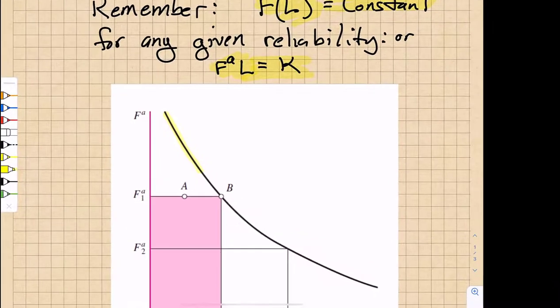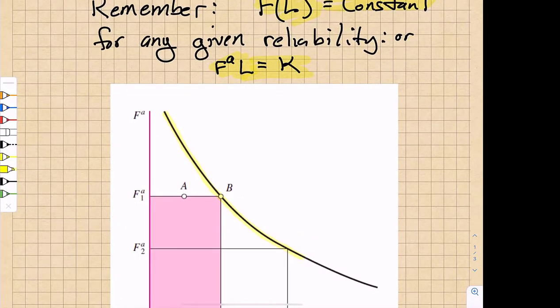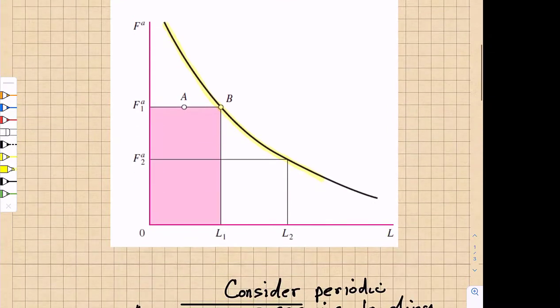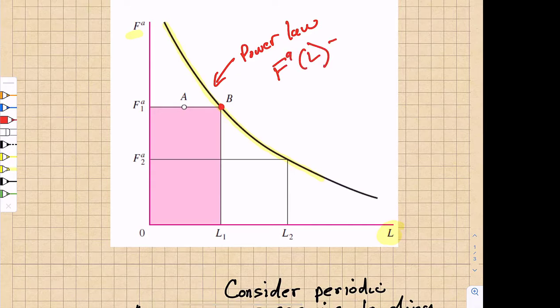That puts you right on the load lifetime curve, and here's a reproduction of the load lifetime curve where now what we have done is write it in terms of radial load to the power a plotted against the lifetime L. And the important thing here is that this line, the load to the a power times L equals some constant. So everywhere on that line you're equal to the same constant.